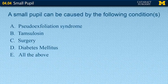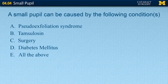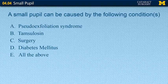A small pupil can be caused by the following conditions: A, pseudoexfoliation syndrome; B, tamsulosin; C, surgery; D, diabetes; E, all the above. The correct answer is E, all the above.